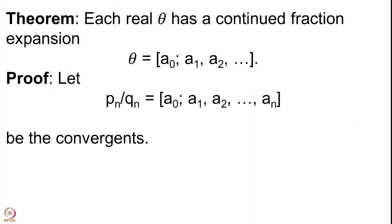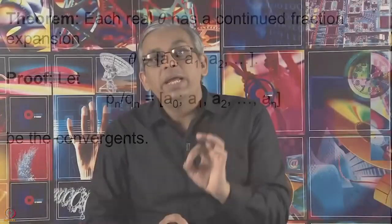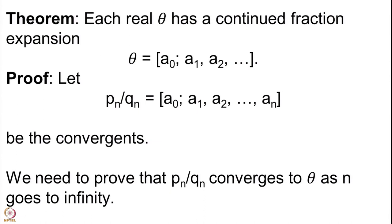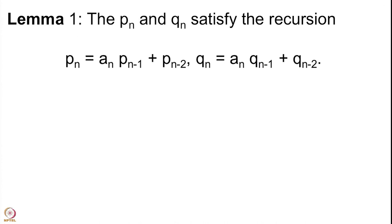For the proof, let us fix the notation once again because we are going to prove a major theorem. Pn upon Qn are the rational numbers giving the continued fraction a0, a1, a2 up to an. Once I call it a continued fraction it has to be a rational number, obtained by cutting the continued fraction expansion at the nth stage. The proof is very big — there are several steps, so it is imperative that such a long proof be broken into several small proofs, which we call lemmas.